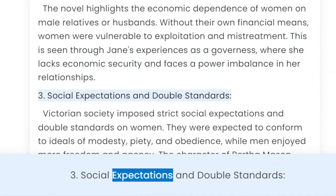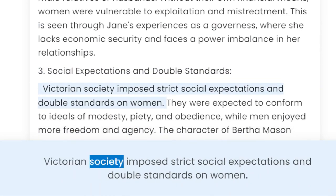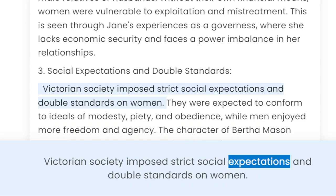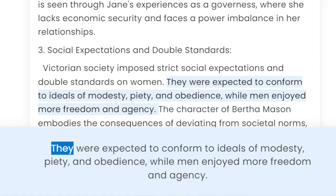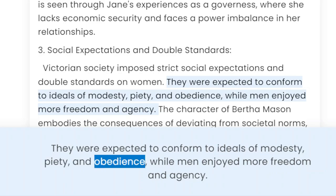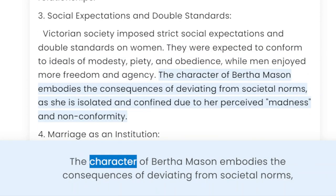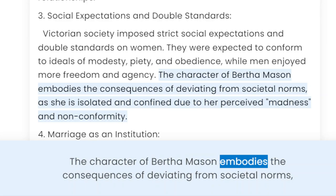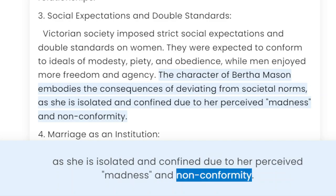3. Social Expectations and Double Standards. Victorian society imposed strict social expectations and double standards on women. They were expected to conform to ideals of modesty, piety, and obedience, while men enjoyed more freedom and agency. The character of Bertha Mason embodies the consequences of deviating from societal norms, as she is isolated and confined due to her perceived madness and non-conformity.